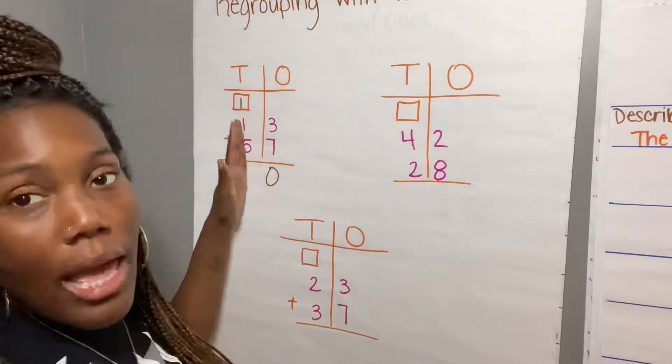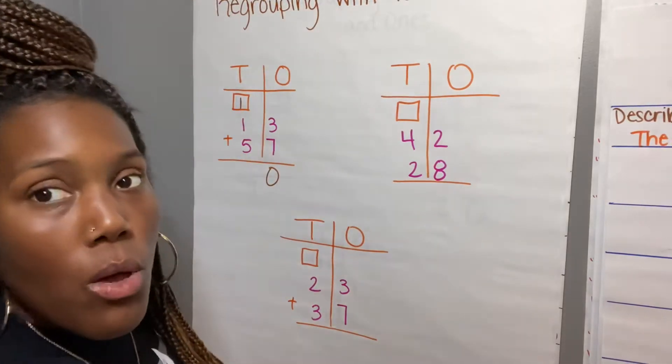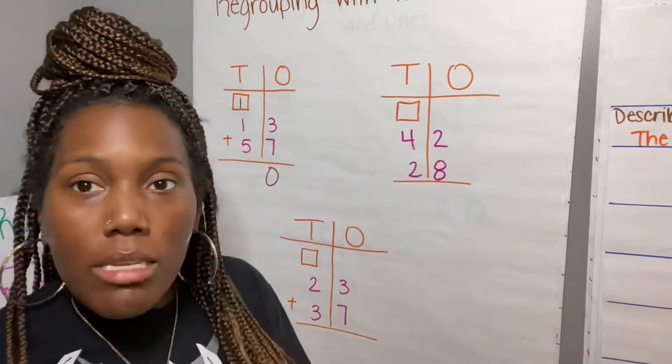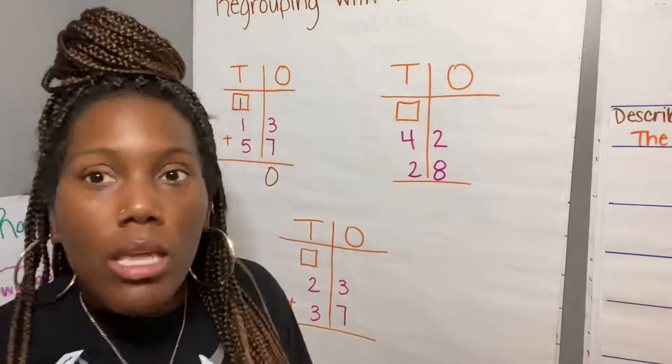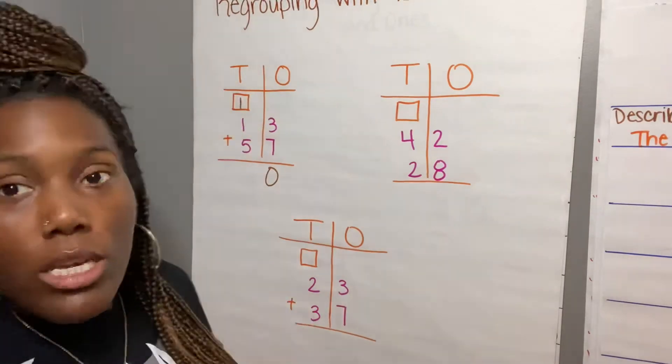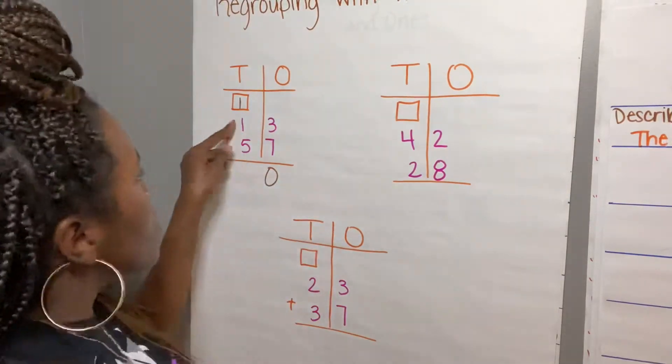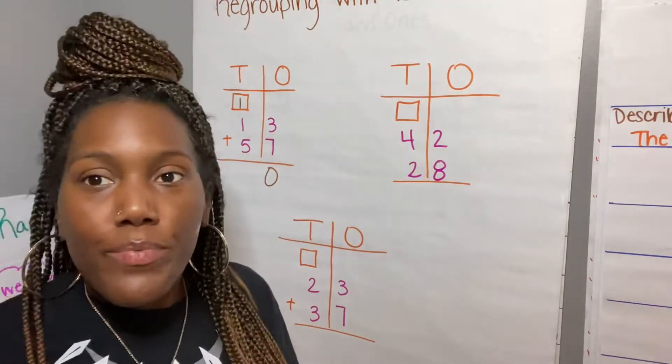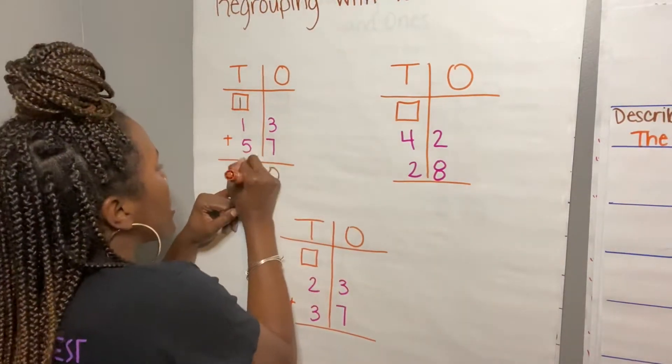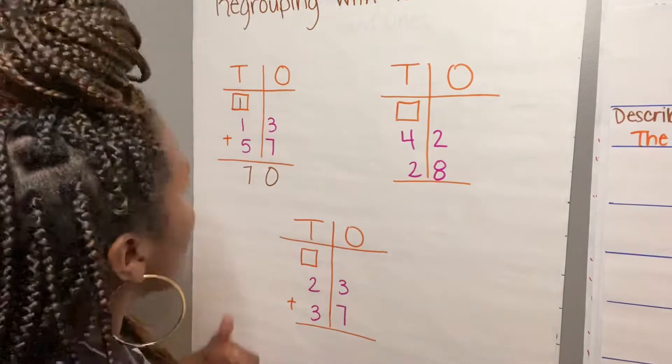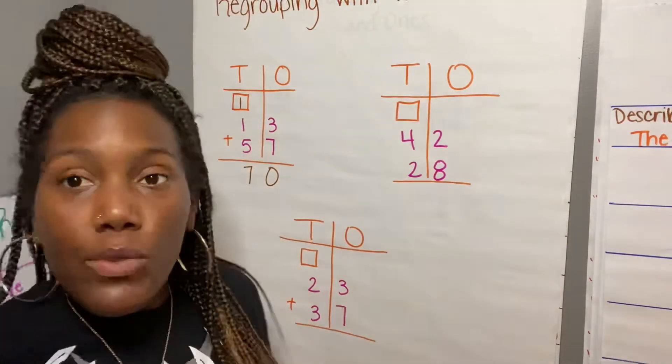So I would do 1 plus 1 equals 2, and then 2 plus 5, which equals that 7. And I'm going to put my number 7 there. Now there are lots of ways that we can check this work.